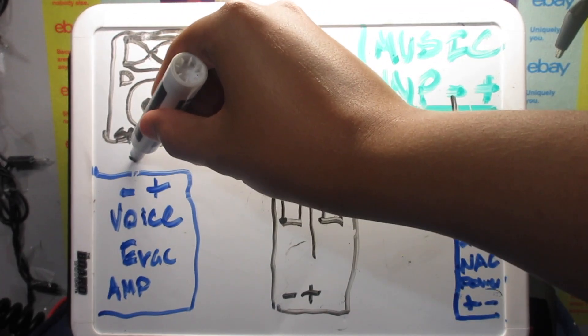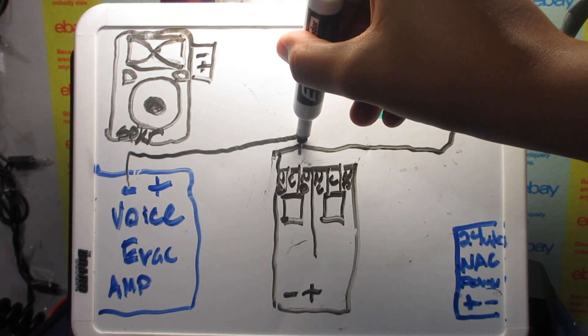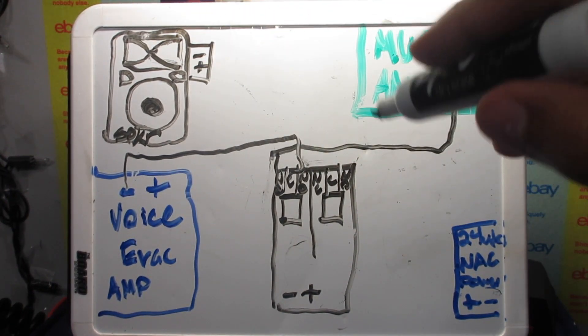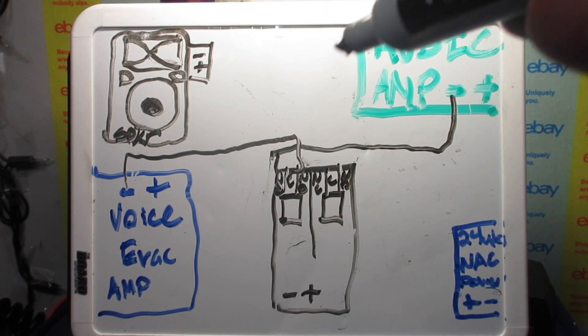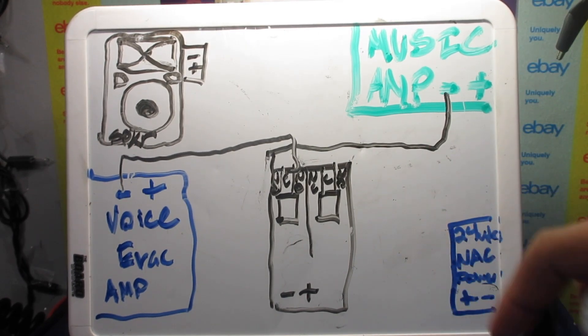Then we take our voice evac negative and bring it to the normally open because we want it to not be playing music or voice evac sounds when the panel isn't activated or when there's no power to the relay.